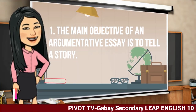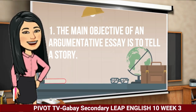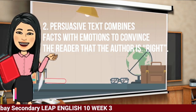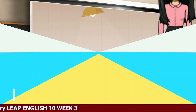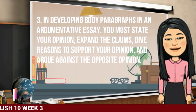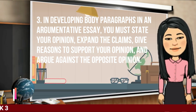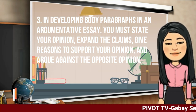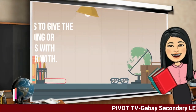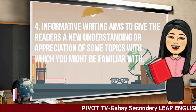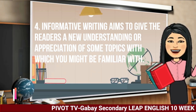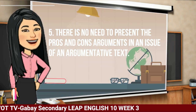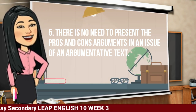Number 1: The main objective of an argumentative essay is to tell a story. Number 2: Persuasive text combines facts with emotions to convince the reader that the author is right. Number 3: In developing body paragraphs in an argumentative essay, you must state your opinion, expand your claims, give reasons to support your opinion, and argue against the opposite opinion. Number 4: Informative writing aims to give the readers a new understanding or appreciation of some topics with which you might be familiar. Number 5: There is no need to present the pros and cons arguments on an issue in an argumentative essay.